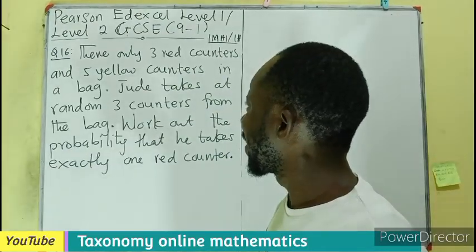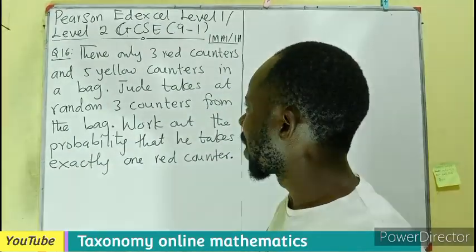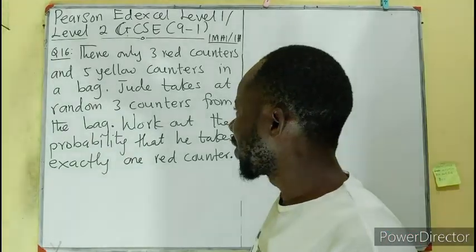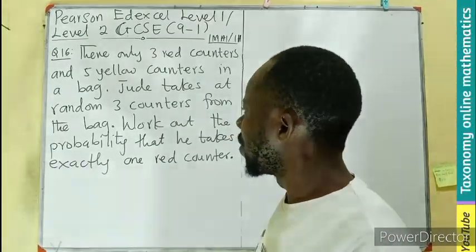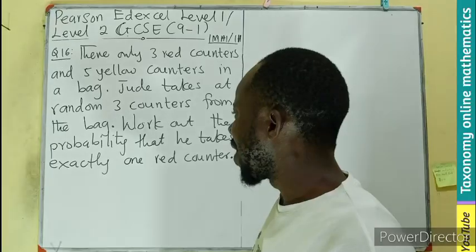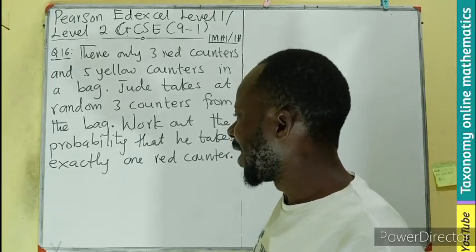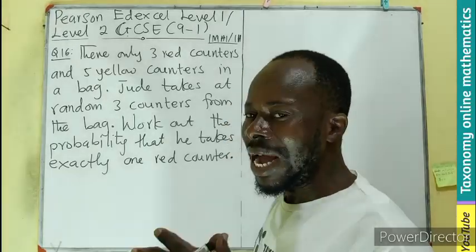There are three red counters and five yellow counters in a bag. Jude takes at random three counters from the bag. We have to work out the probability that he takes exactly one red counter.